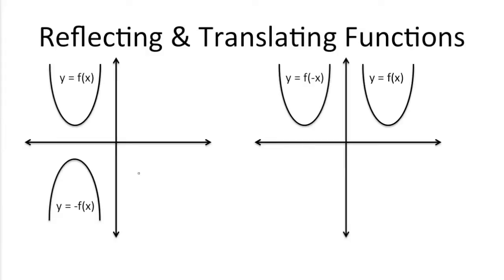On the test, you may encounter certain questions asking you to reflect or translate functions or graphs. For example, here we have a parabola y equals f of x being reflected over the x-axis. What this means is, if you were to take this as a piece of paper and fold it along the x-axis, this curve and this curve would match up perfectly. The same can be said over here, except we're going from this side on the right and reflecting it over to the left, and you could fold an imaginary piece of paper over the y-axis, and this parabola and this parabola would line up perfectly.